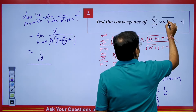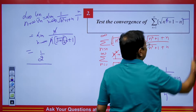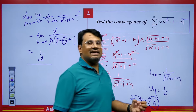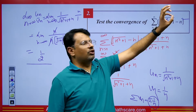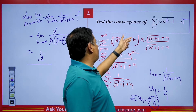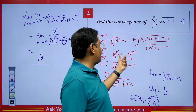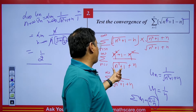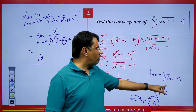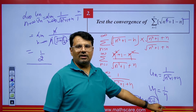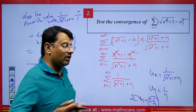Now let's alter the same question. Suppose instead we have the square root of (n to the power 4 plus 1) minus n squared. By rationalizing with the conjugate square root of (n to the power 4 plus 1) plus n squared, vn at the denominator would be 1 upon n squared, which is convergent by p-series. So that variant would give a convergent series. Pay attention to the given question carefully.